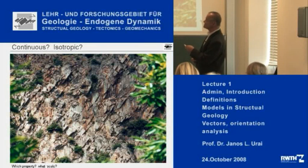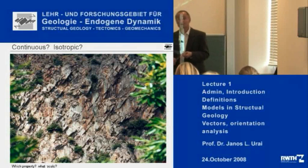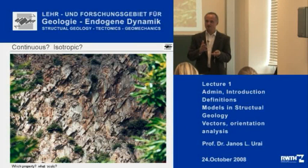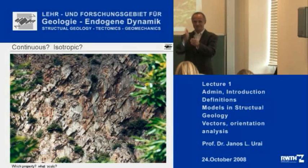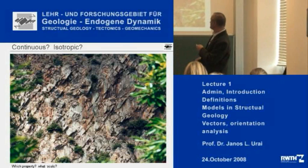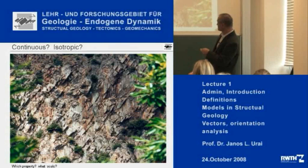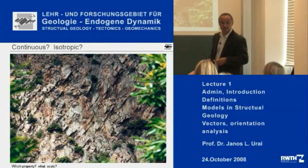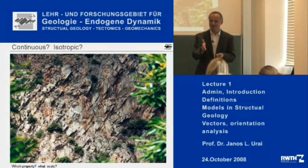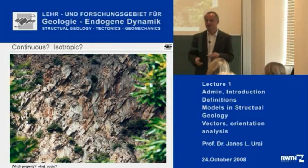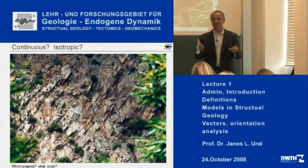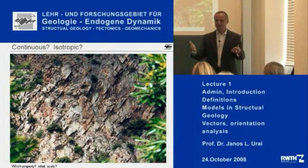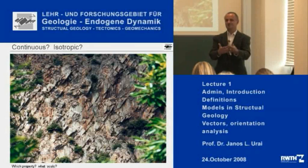Continuous is something where a property doesn't change sharply — it can change, but not in a jump. For example, a fracture in granite is really a discontinuity, so a fractured rock is not continuous. But again, this is a question of scale: if a granite has many fractures and you look from a distance, it can look rather continuous.